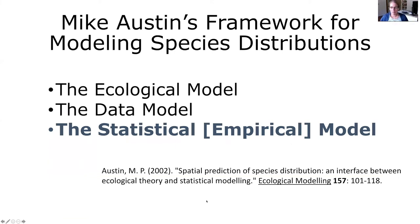Mike Austin published a framework for modeling species distributions in three parts: the ecological model underpinning these empirical models — which you've already discussed in terms of niche theory — the data model, covering both the species and environmental data used in species distribution modeling, and then the statistical model. That's what this section of the course is now focusing on.